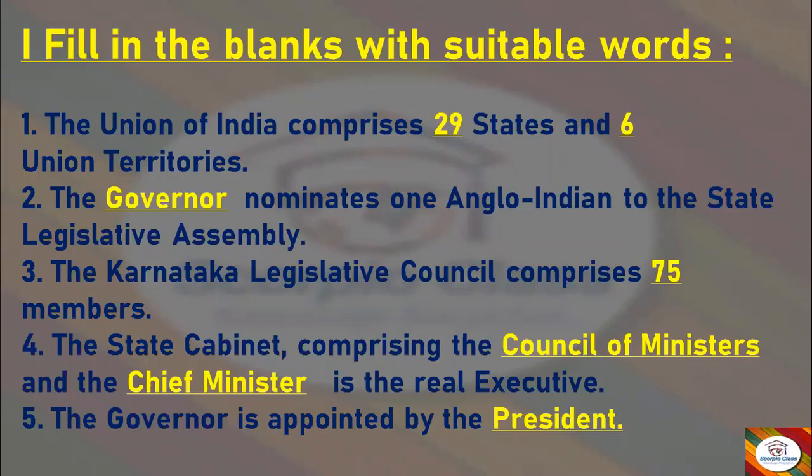First: The union of India comprises 29 states and 6 union territories. Next: The governor nominates one Anglo-Indian to the state legislative assembly.